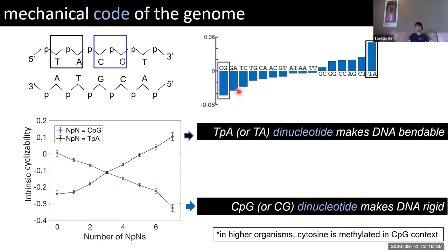We can do the same analysis for all possible dinucleotides and plot the slope of each curve. CpG or CG is the least bendable with a negative slope, and TA is the most bendable with a positive slope, with everything in between. Importantly, if you look at the sequences, it's not just GC content — CG is here, but GC is on the opposite side. So there's something we didn't know about these sequences that determines their contributions to DNA bendability.